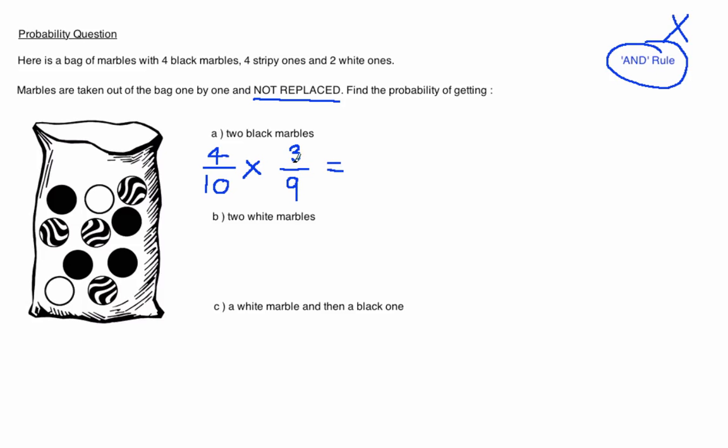In this question we can cancel down the second and the first fraction. In the first we divide by 2 to give us 2 fifths. In the second we divide by 3 to give us 1 third. And now we can multiply the numbers together. 2 times 1 is 2 over 5 times 3 is 15. So the answer for part A is 2 out of 15.